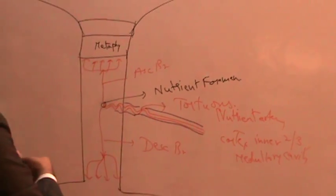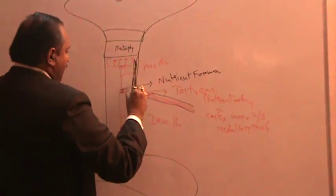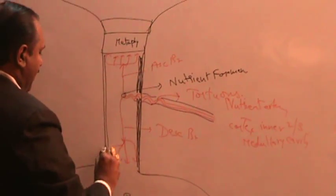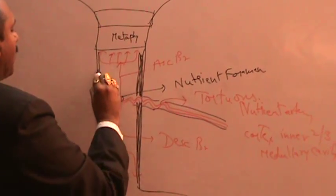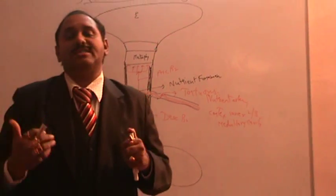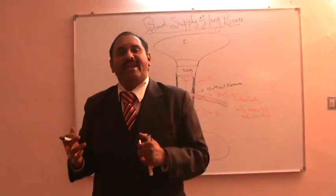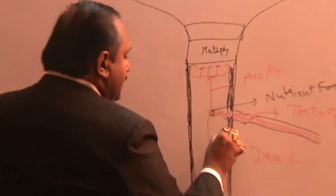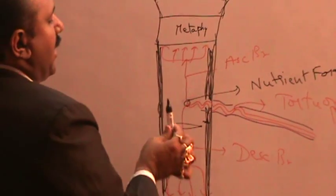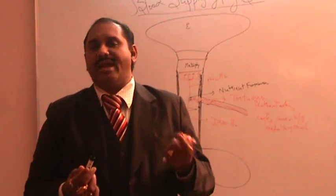The branches of the nutrient artery supply the inner two-thirds of the cortex and the entire medullary cavity. The cortex of a long bone is very thick — it is made of compact bone — and this cortex is what gives the bone its strength, enabling transmission of body weight.